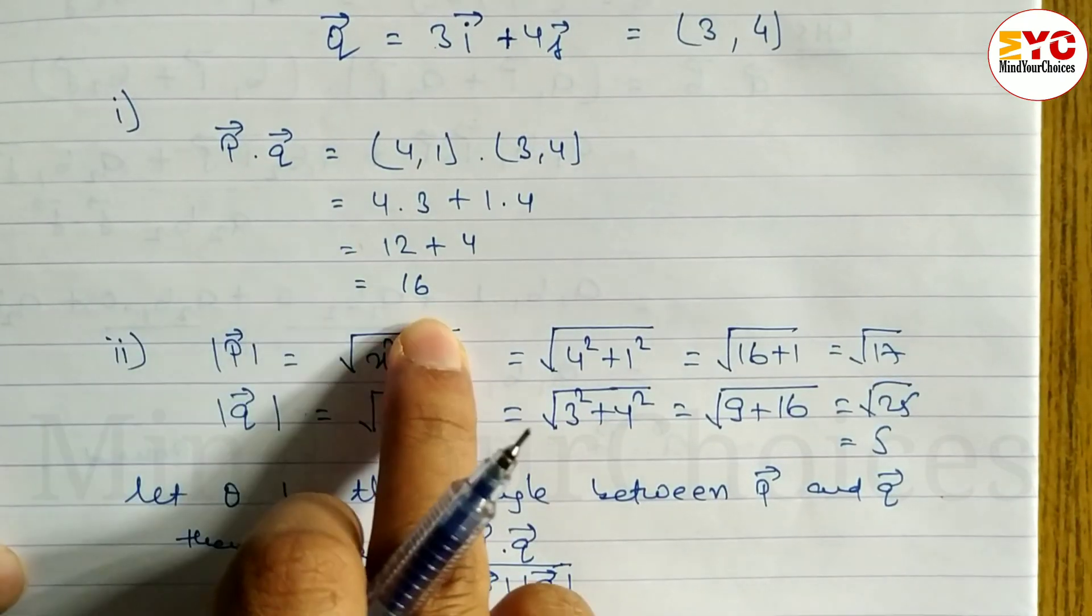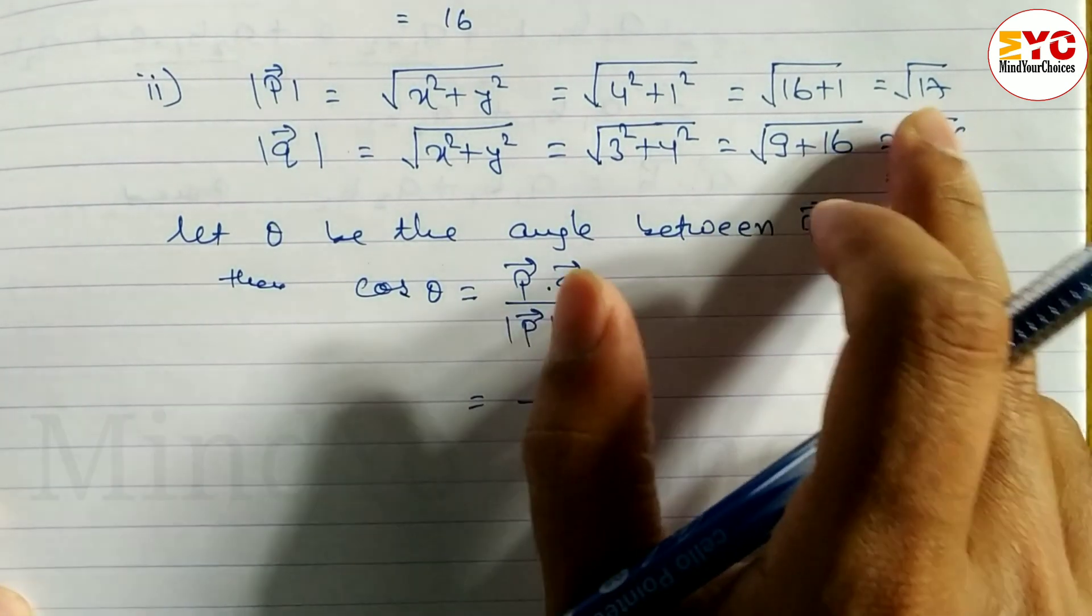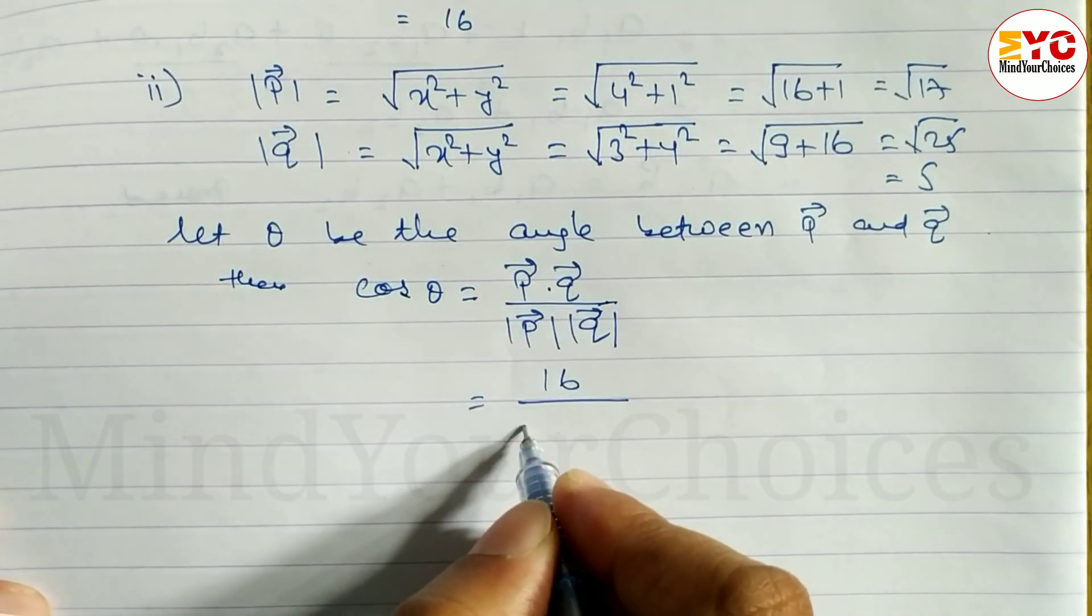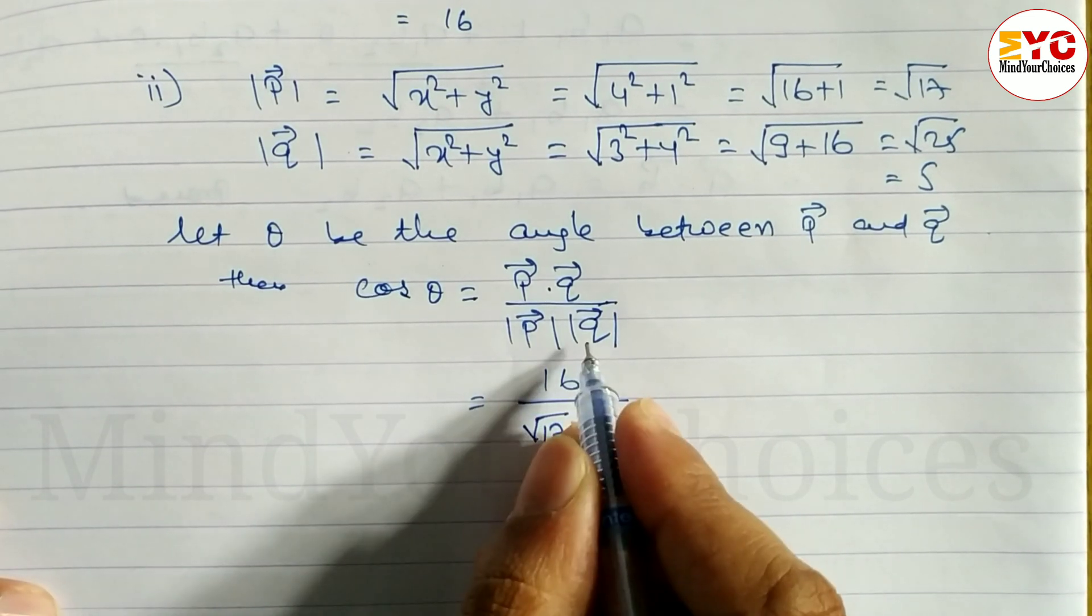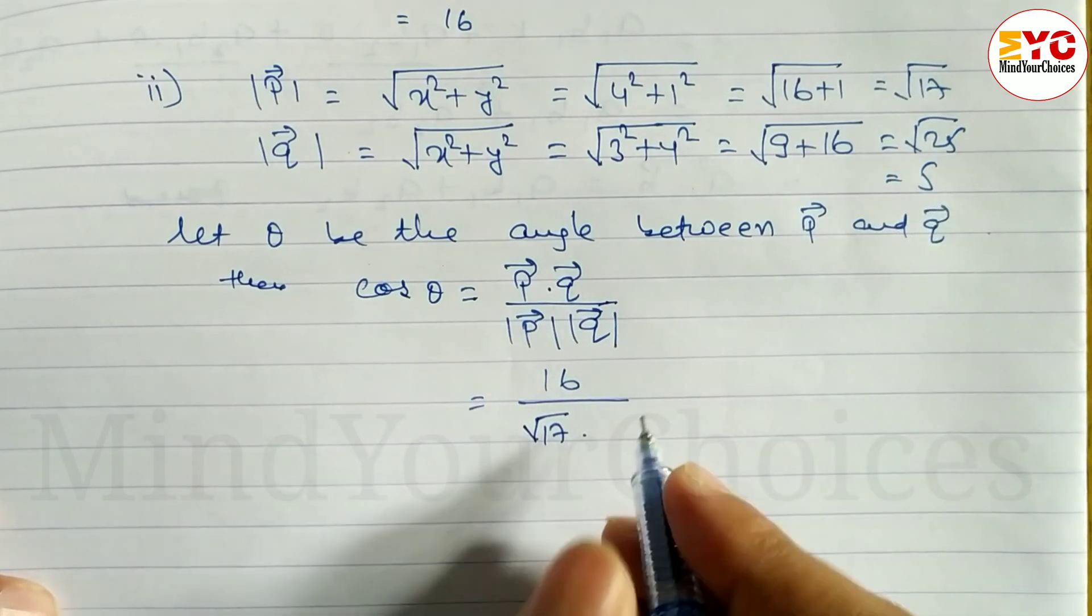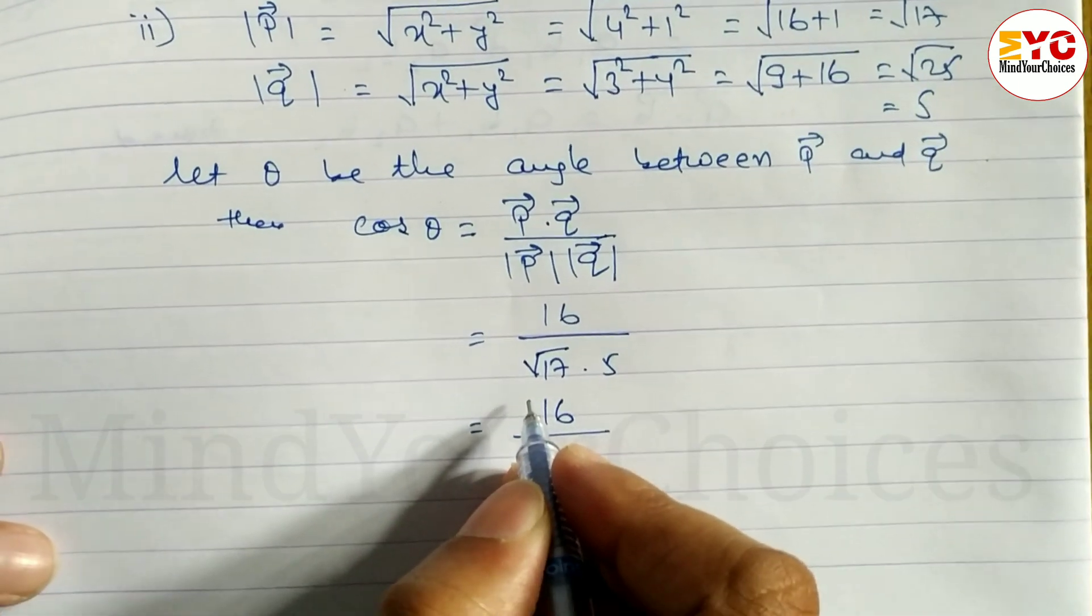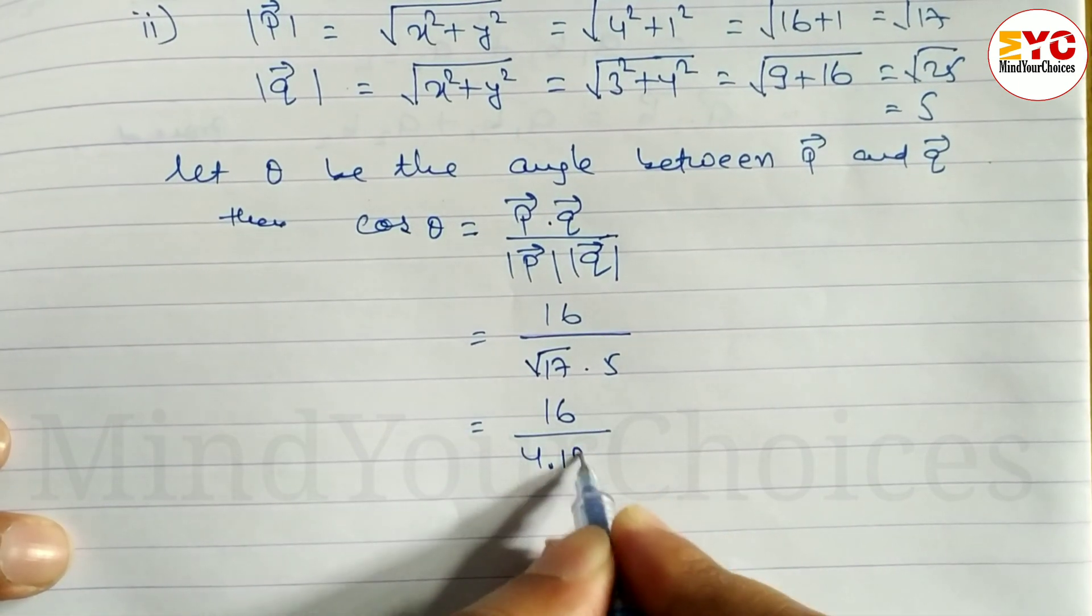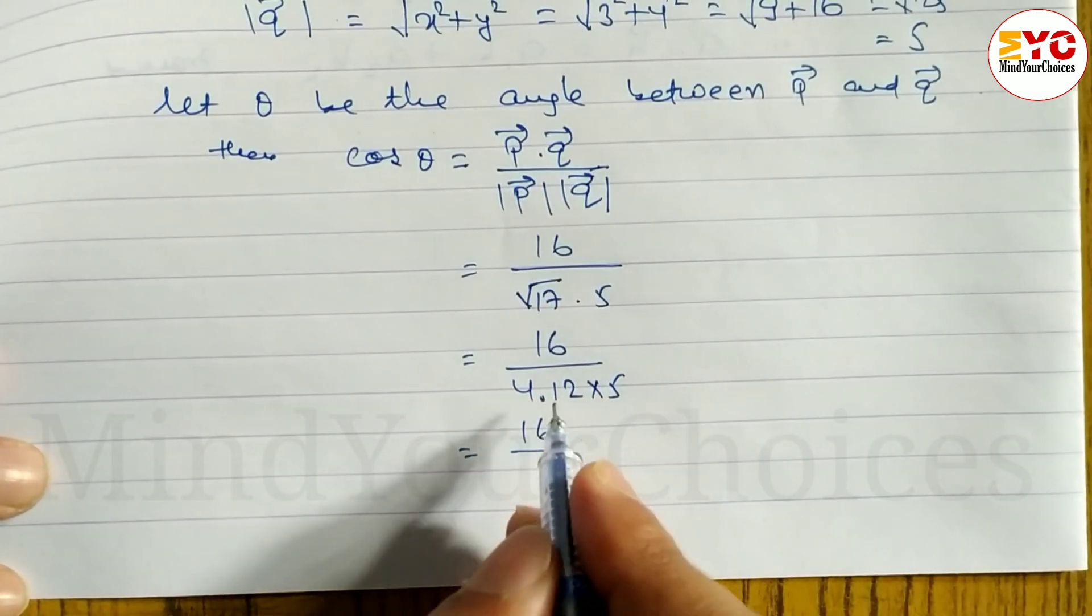Scalar product is 16, so we write 16 divided by magnitude of P, root under 17, into magnitude of Q which is 5. Equals 16 divided by root 17 into 5. Root 17 is 4.12 into 5.